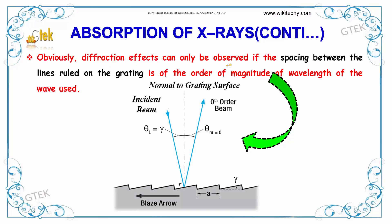Diffraction effects can only be observed if the spacing between the lines ruled on the grating is of the order of magnitude of the wavelength of the wave used. You can see the incident beam and the 0th order beam. The incident beam angle theta_L equals gamma alpha, and theta_M equals zero.